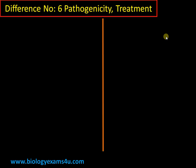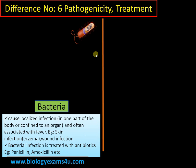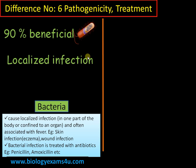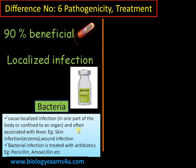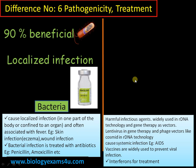Difference number six is regarding pathogenicity and treatment. For bacteria, 90% are beneficial — without bacteria we couldn't even survive, as the number of bacteria in our body far exceeds the number of our own cells. Bacteria cause localized infections; common infections include skin infections like eczema and wound infections. Treatment is by using antibiotics like penicillin or amoxicillin.